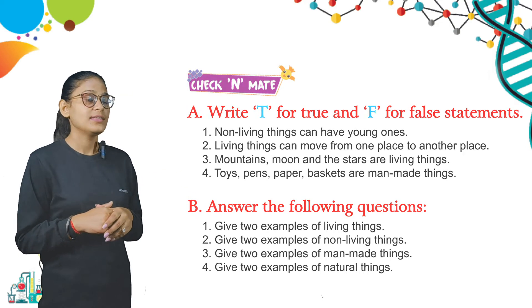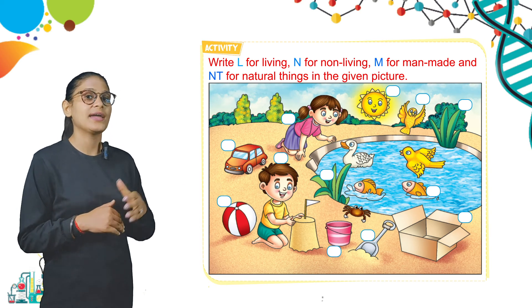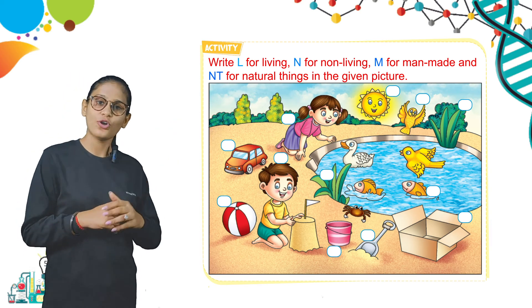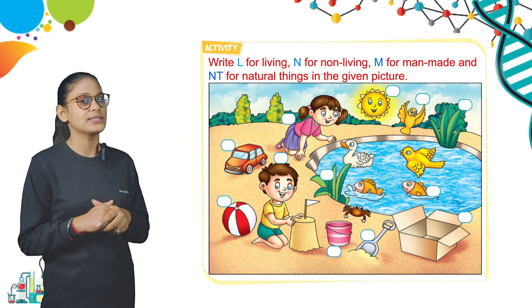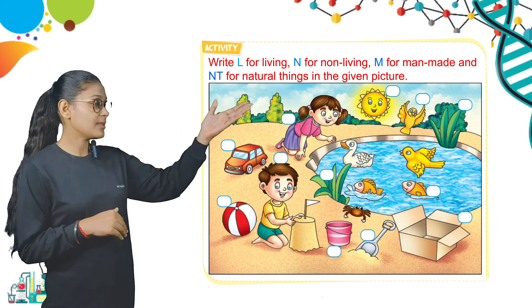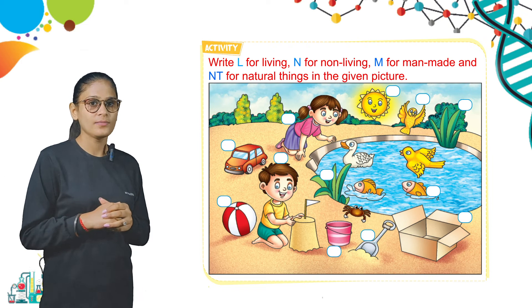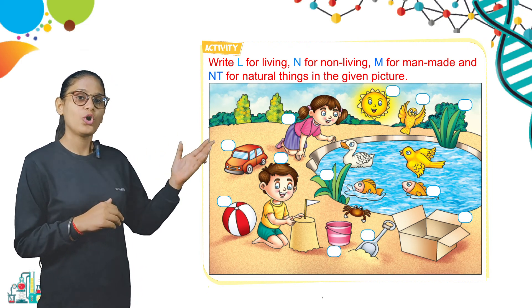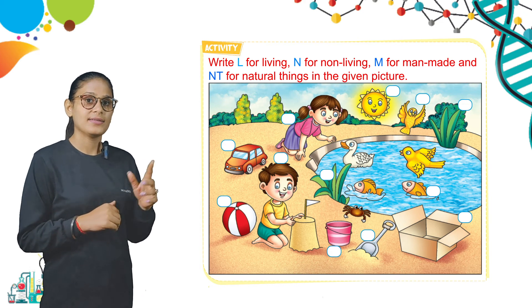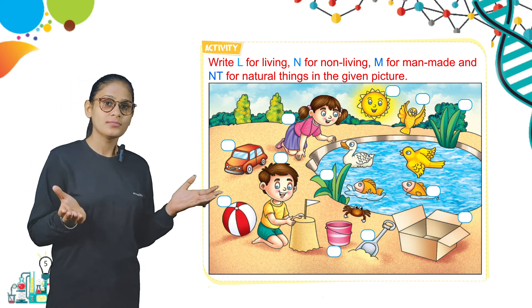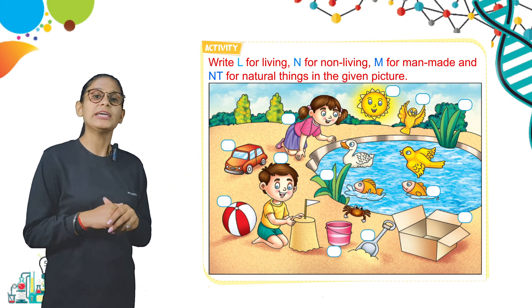Now we discuss our activity. Write L for living, N for non-living, M for man-made, and NT for natural things in the given picture. Look at the picture and identify the thing. For example, there is a ball — ball is a man-made thing. There is a sun — that is a natural thing. Also there is a girl and a boy — they are living things, so write L there.